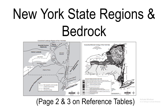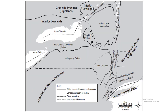This lesson is on the New York State Regions and Bedrock Maps, which is page 2 and page 3 of the reference tables. Here we have the region page, page 2. Each part of this map has the region and the region name. It's pretty straightforward. They're just divided by solid lines and dotted lines where the transition is.